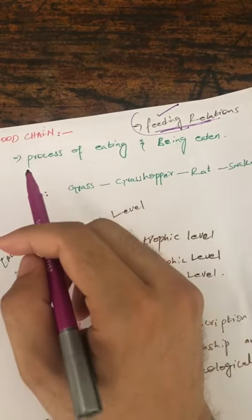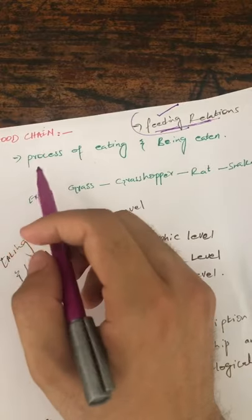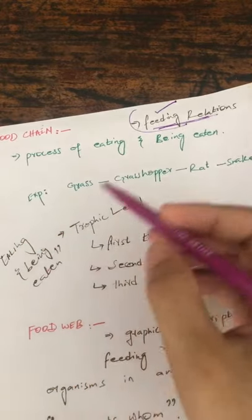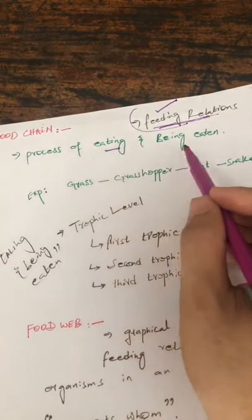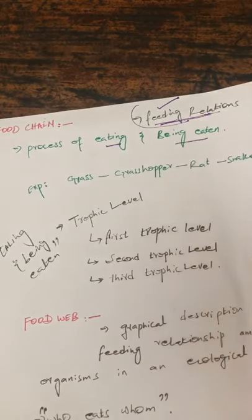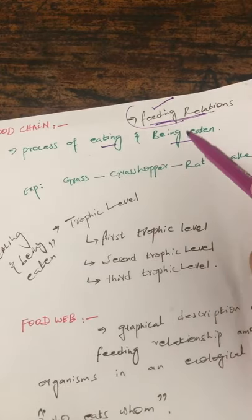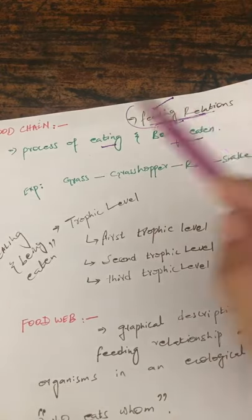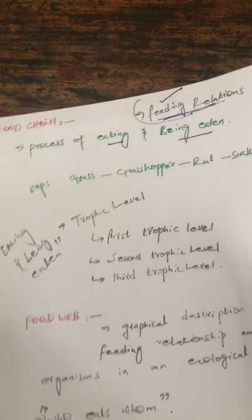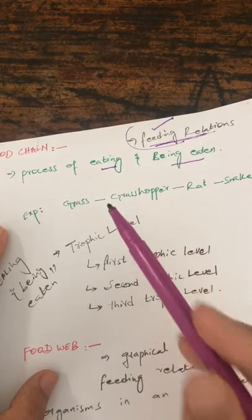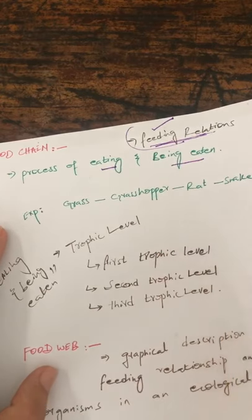What is basically the food chain? The food chain is a process of eating and being eaten. We have a process of eating and being eaten, which is the feeding relationship. A process of eating and being eaten is known as the food chain. In any environment, we can have a feeding relationship. This is a simple thing.